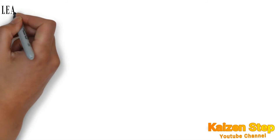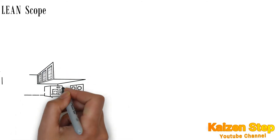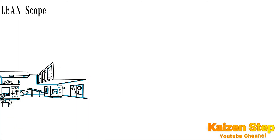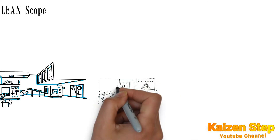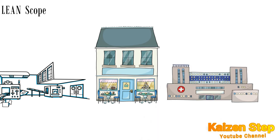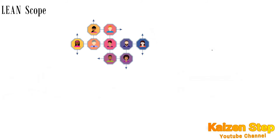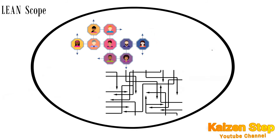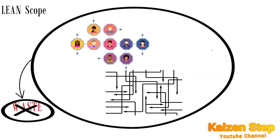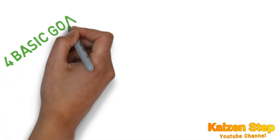Now that we know initially what lean is, we need to know what is the scope of lean. Lean is all about processes that can be applied to every business and in every process, like production processes in a factory, in restaurants, or in hospitals. Lean is about efficiency — moving material and ideas through a process in a smooth, well-organized manner while removing waste and decreasing costs along the way.